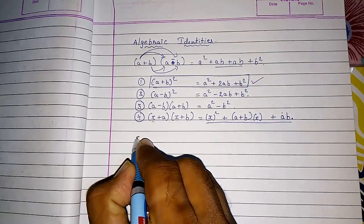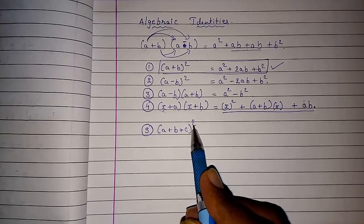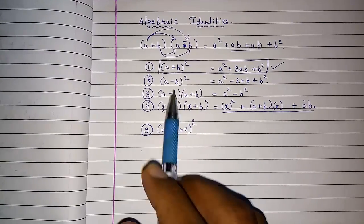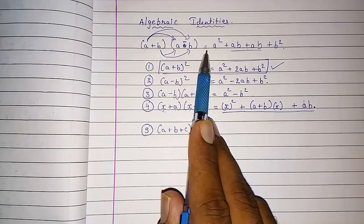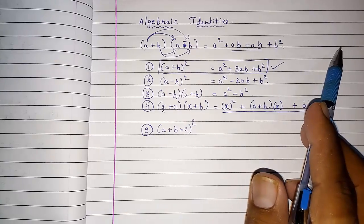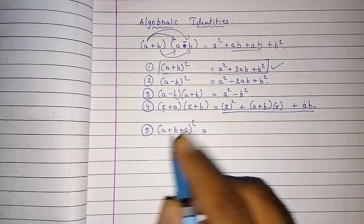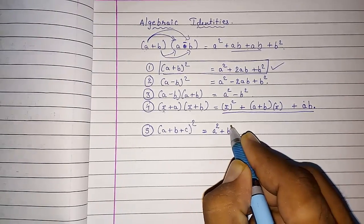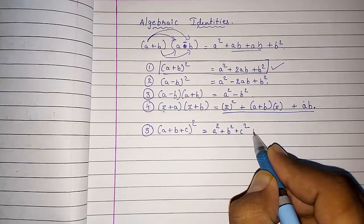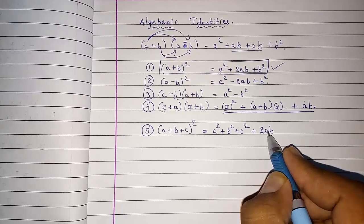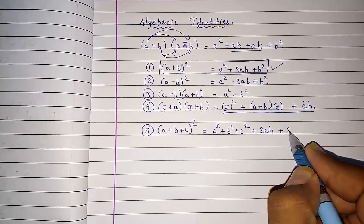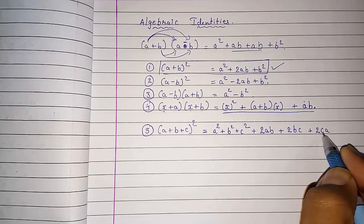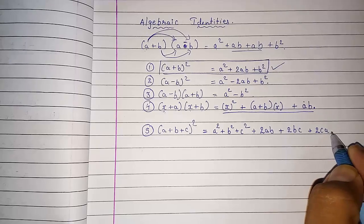Look here the fifth shortcut: A plus B plus C whole square. Here they had given us three terms — actually two terms were there before, now we are having three terms. So A plus B plus C into A plus B plus C, if you will multiply, you will get six answers. So directly they had given us a short method: whenever three terms are there and the whole square is there, directly we write A square plus B square plus C square, then plus 2AB, plus 2BC, plus 2CA. So this is our fifth identity.